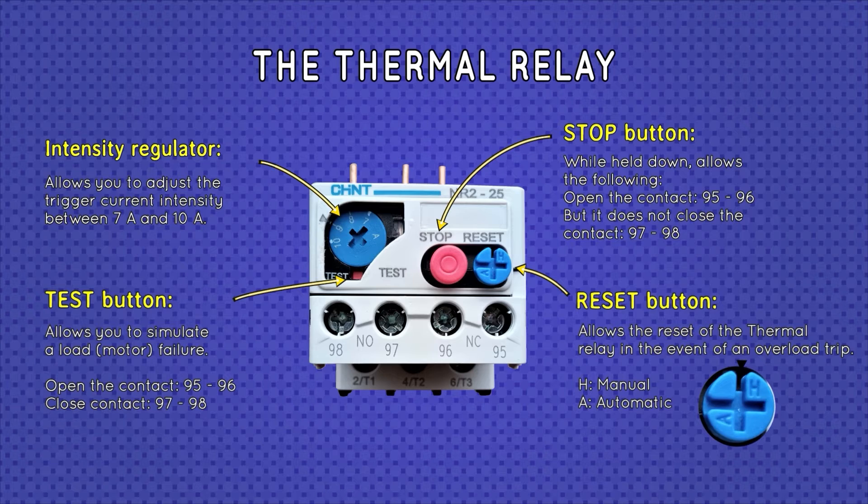The stop button allows the engine to be stopped, that is, it opens contact 95, 96 but does not close contact 97, 98 since this should only be closed to indicate a fault or alert about a problem in the engine. So, this is all we can find in a thermal relay.